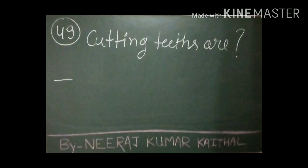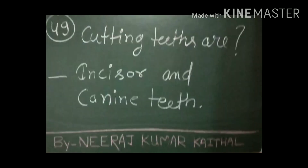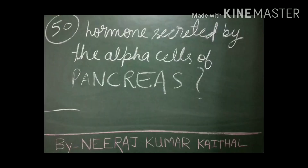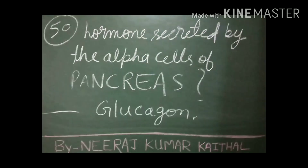Cutting teeth are the incisor and canine teeth. Premolar and molar are the grinding teeth. The hormone secreted by the alpha cells of the pancreas is glucagon. In pancreatic islets, three types of cells are present: alpha cells secrete glucagon, beta cells secrete insulin, and delta cells secrete somatostatin. The pancreas is a gland that works as both an endocrine and exocrine gland.